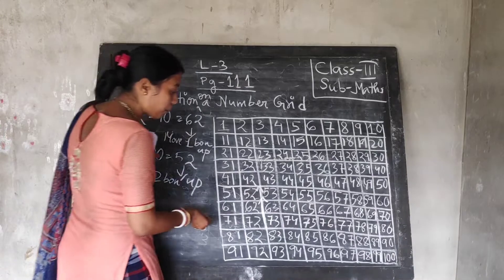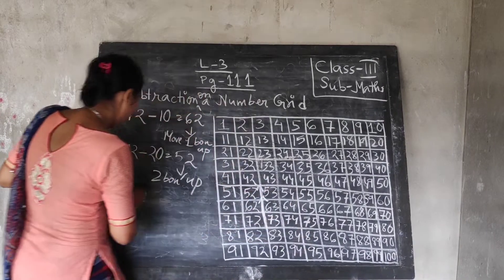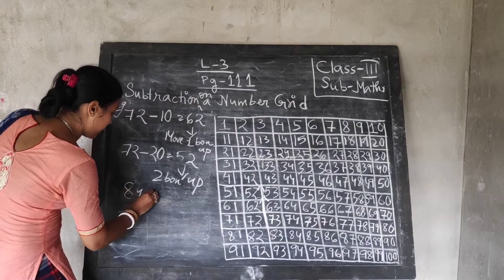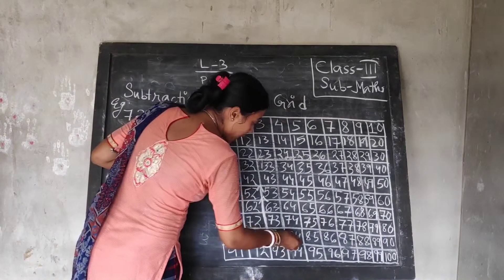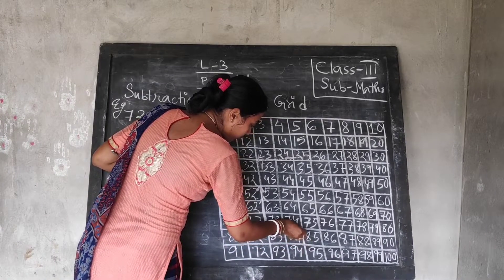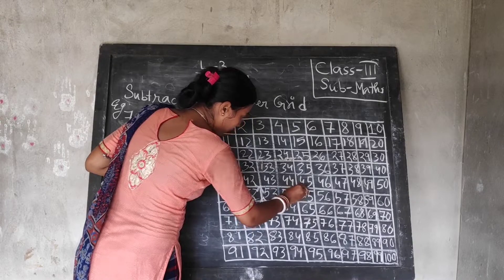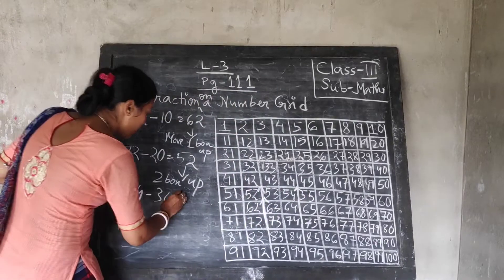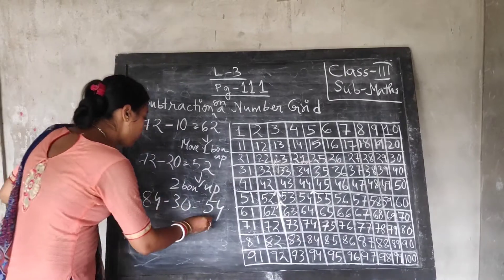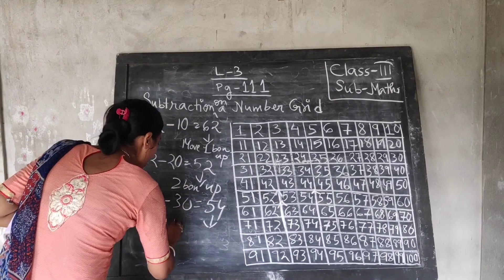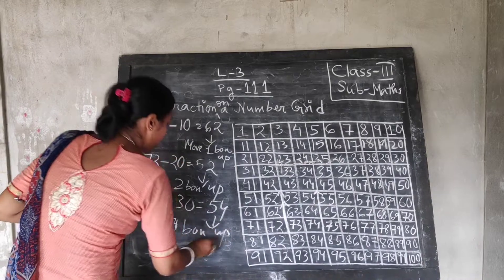Suppose, take another example. Suppose you take 84. So, 84 minus 30 — how much will it come? You have to move three boxes up. How much? 54. So, the answer will be 54. We have moved how many boxes up? Three boxes up. Like this, it will continue.